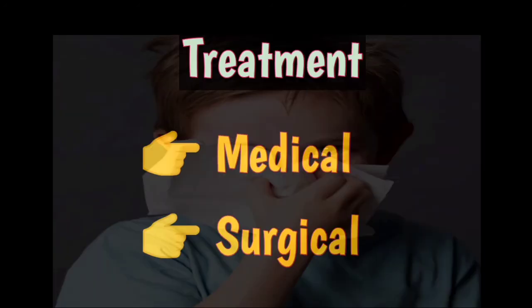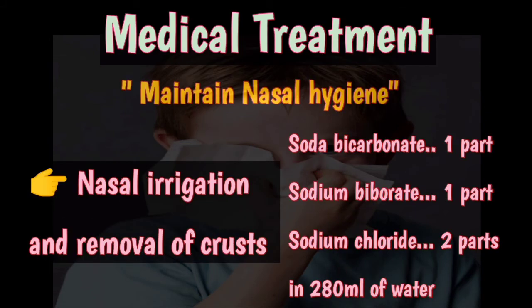Treatment options include medical and surgical treatment. In medical treatment, we have to maintain nasal hygiene, which can be done with nasal irrigation and removal of crusts. For removal of crusts, warm normal saline or alkaline solution is used — made by dissolving a teaspoonful of powder containing sodium bicarbonate one part, sodium chloride one part, and two parts into 80 milliliters of water — to irrigate the nasal cavities. The solution is run through one nostril and comes out from the other, loosening and removing crusts.